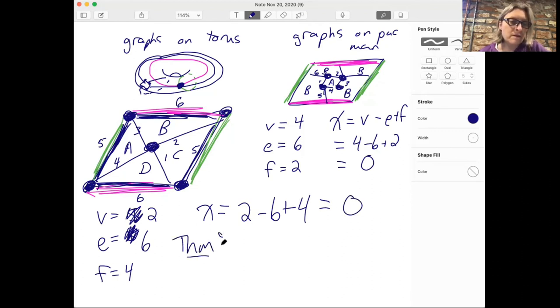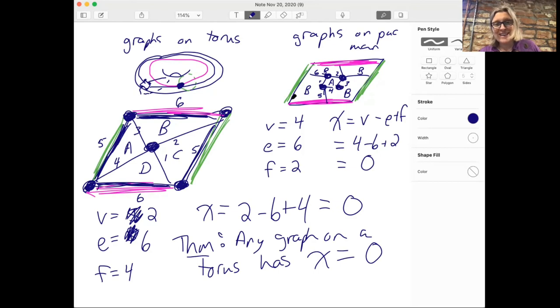And in fact, here's the theorem: any graph on a torus or Pac-Man board has Euler characteristic zero. So if you ever take a course in topology, you might see that this Euler characteristic is a topological invariant. So it only depends on a surface up to homeomorphism. All right, that's all for today.